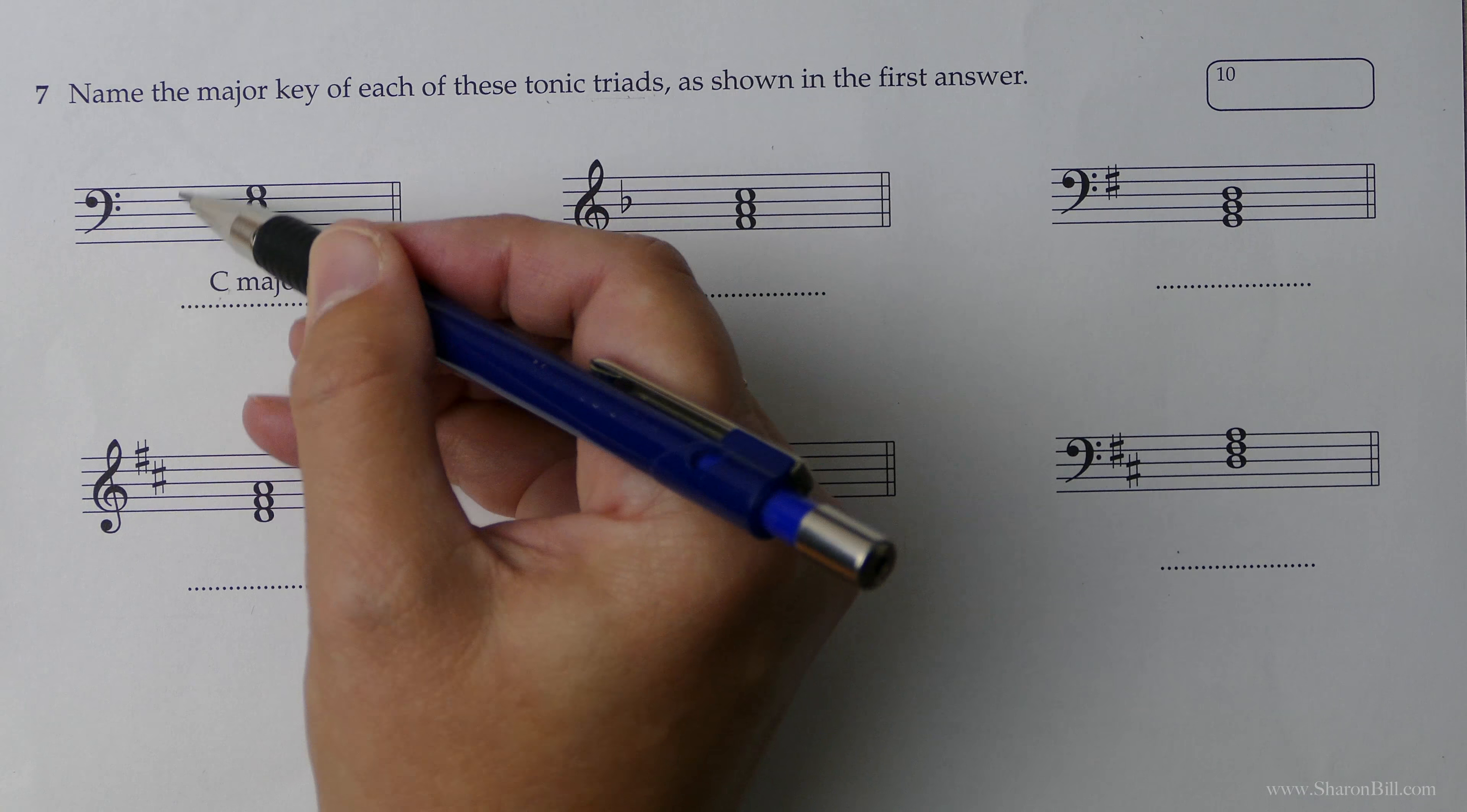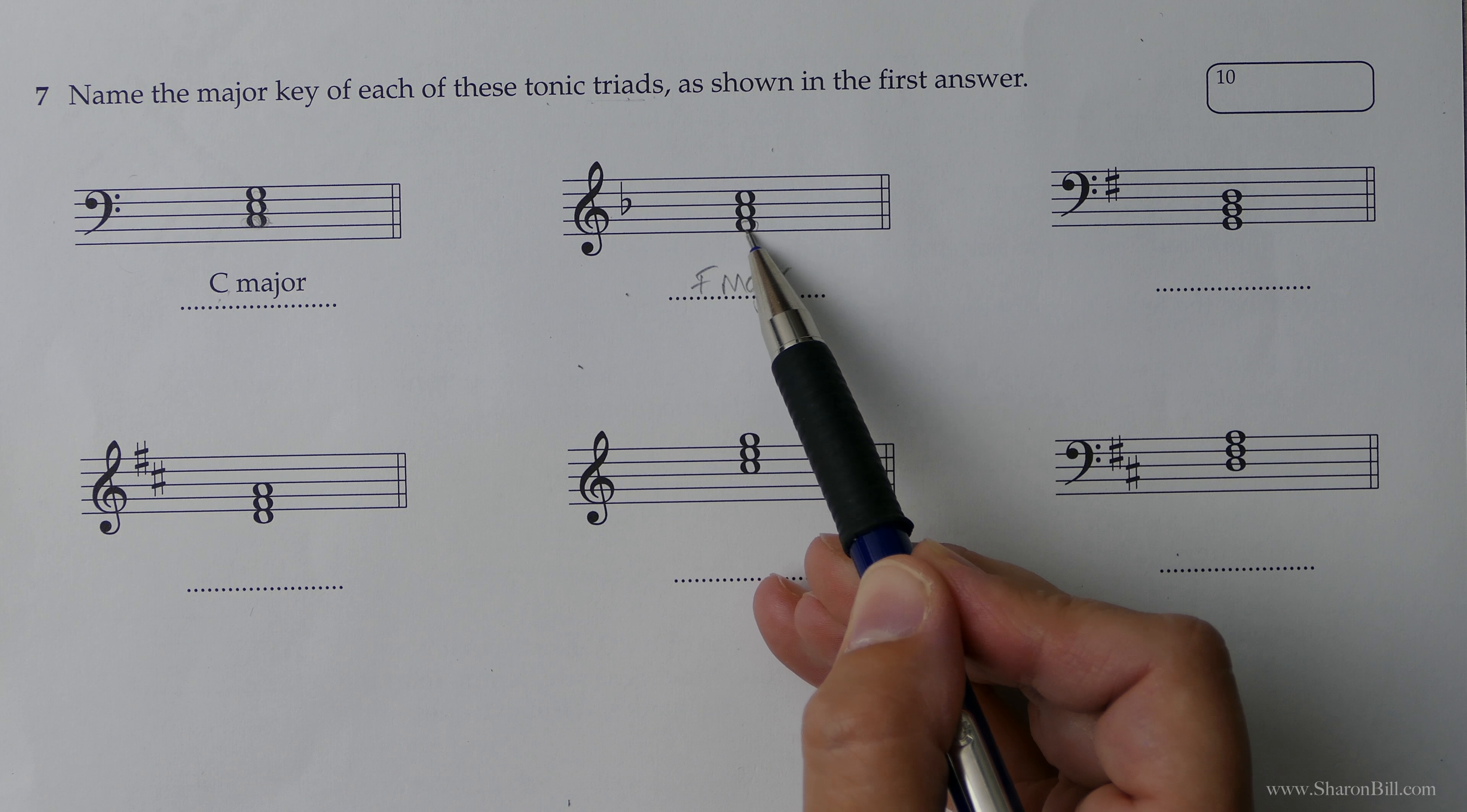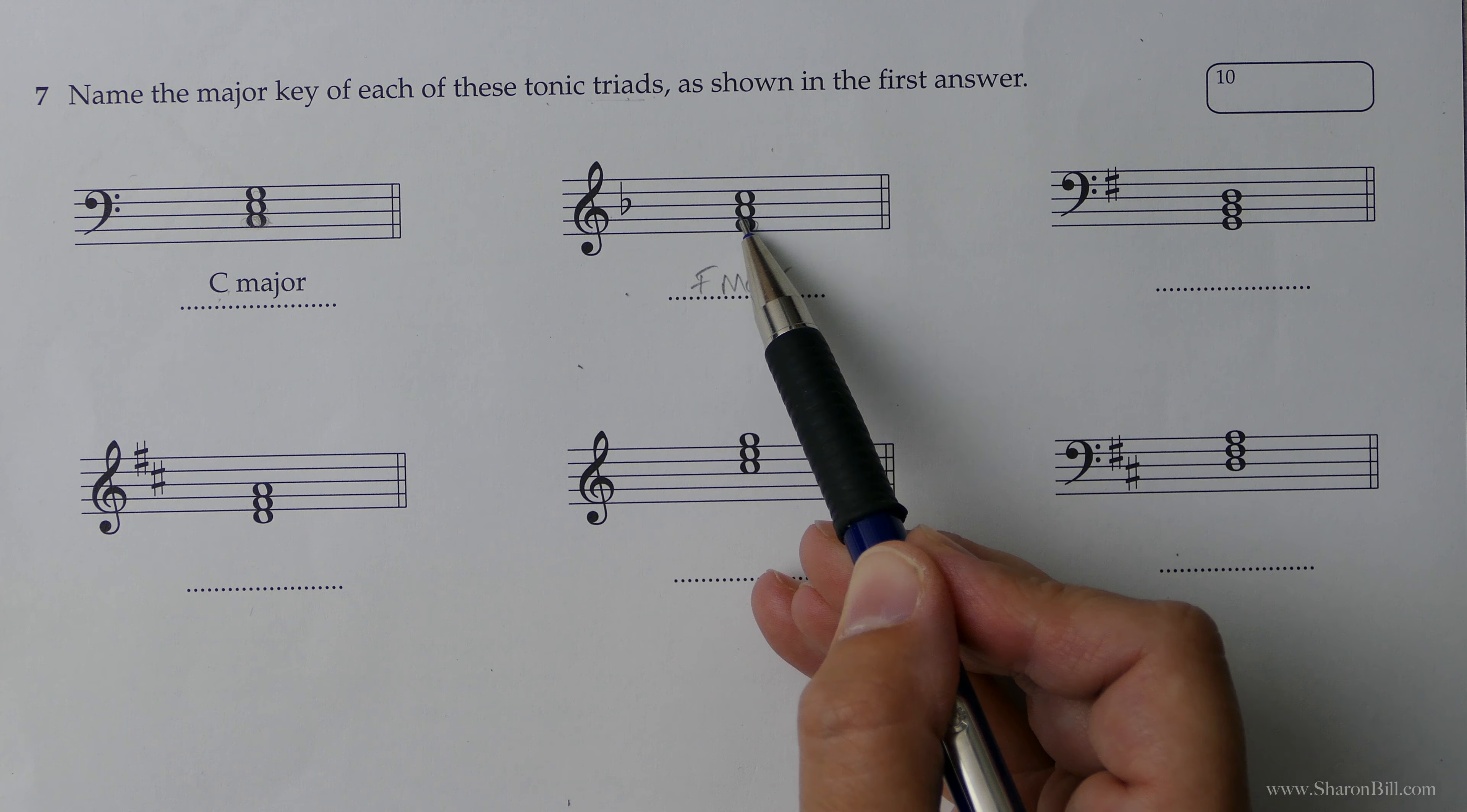So here, straight away, we've got a B flat. So we know that that's F major. Because we know that key signature for F major is B flat. But also we're in the treble clef here. And there we've got an F. Our tonic is an F. First, third, fifth. F, A, C. There we go. So we can just double check it that way.